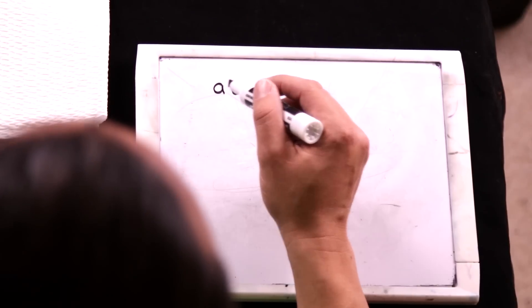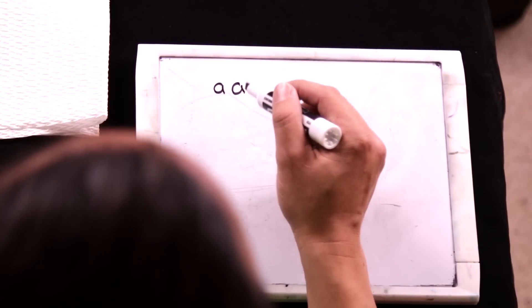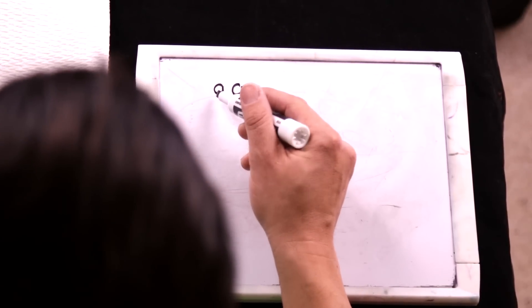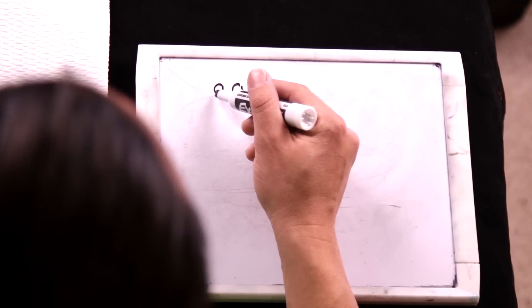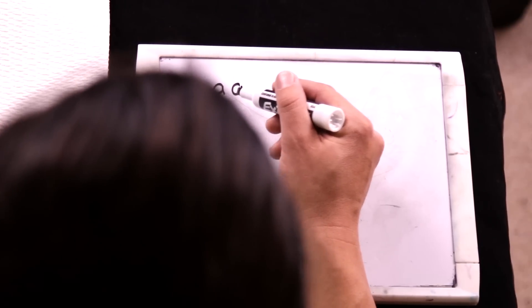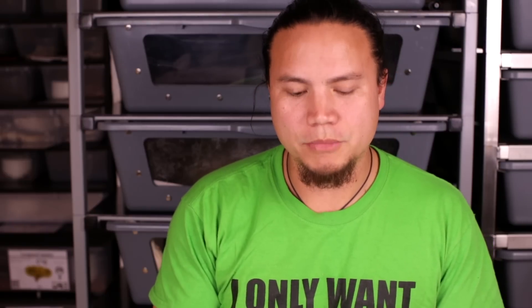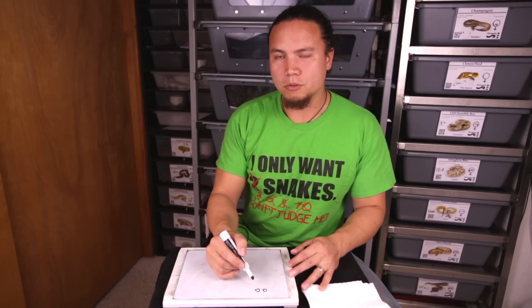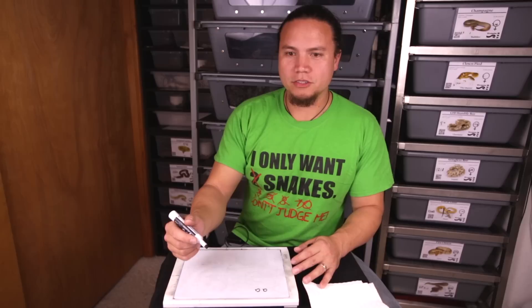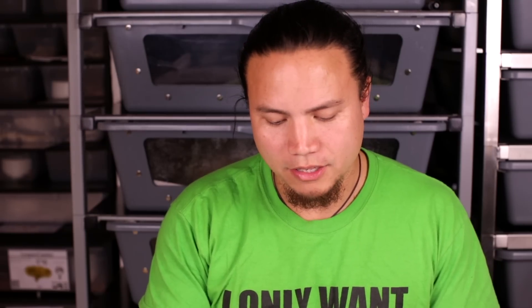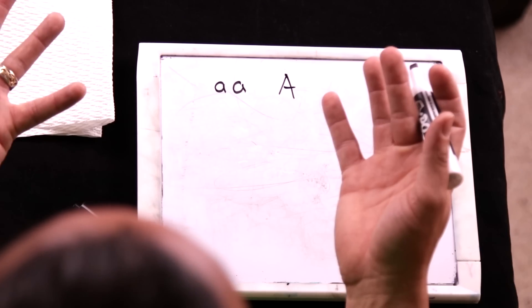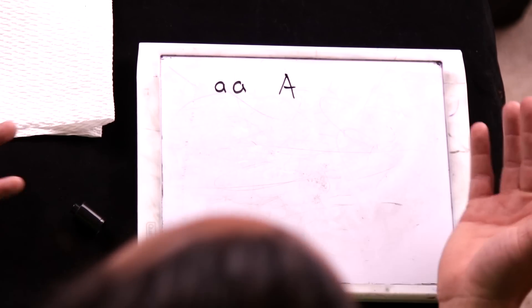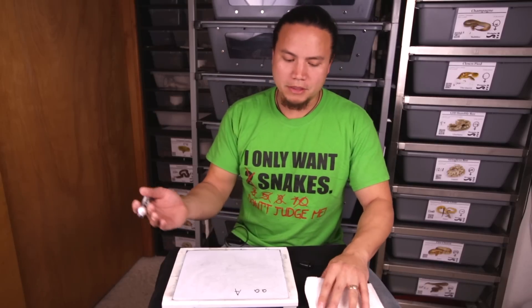Each one of these letters represents an allele on one of the chromosomes for a diploid species. This is the chromosome given by mom, and this is the chromosome given by dad. I use lowercase letters any time I'm using the wild type or normal phenotype, and any time I'm trying to express any kind of morph, I use the uppercase letter. That's just how I do it. Some people do it a little differently using simple recessive versus incomplete dominant traits, but that's just how I do it.